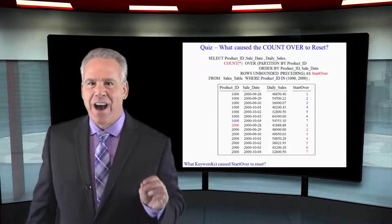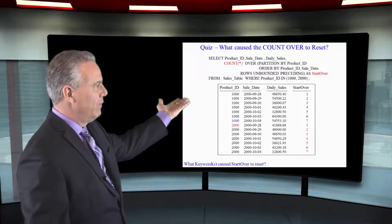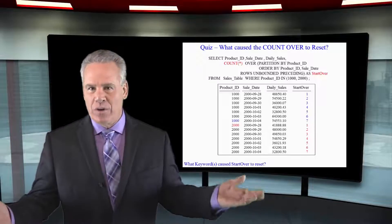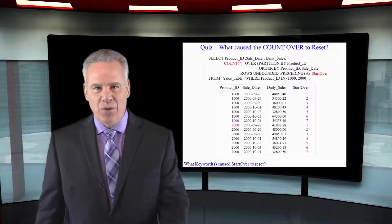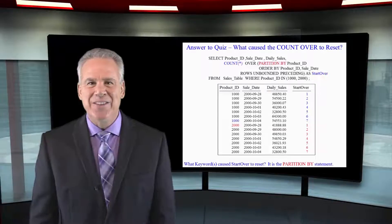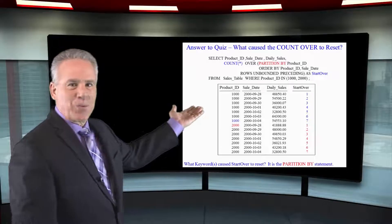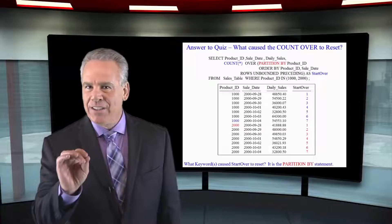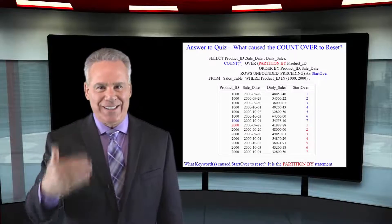Take a look at this answer set. I've color-coded it in blue and red for you. Notice we've got one through seven, and then it resets. I did a COUNT asterisk OVER — I want you to tell me, without seeing the SQL, what made this reset. It's the PARTITION BY statement that makes this reset. Anytime you see any ANSI OLAP with a PARTITION BY statement, only that OLAP will reset.